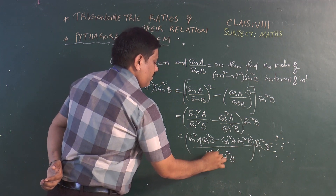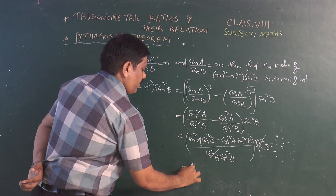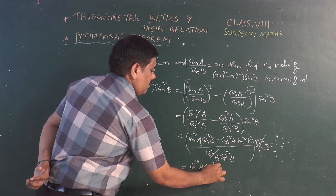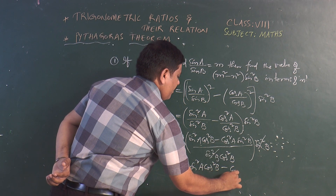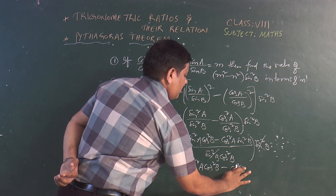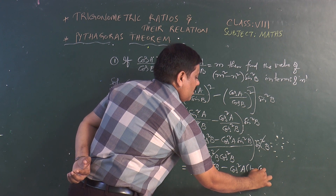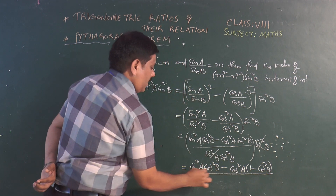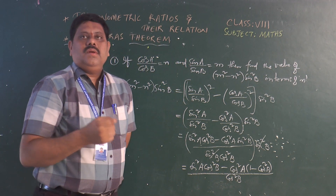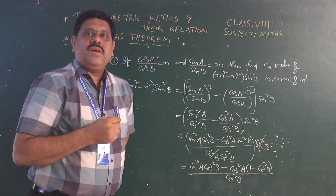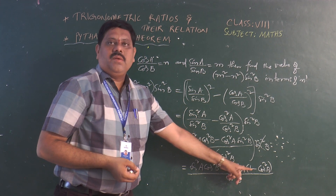So we have sin² B cancelling, and we are going to have sin² A cos² B minus cos² A times (sin² B minus cos² B). Let me write sin² B as 1 minus cos² B upon cos² B, using the identity sin² B + cos² B = 1.